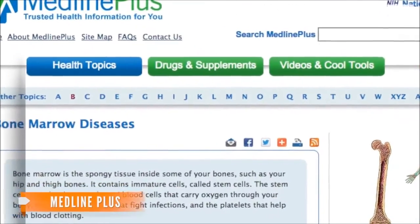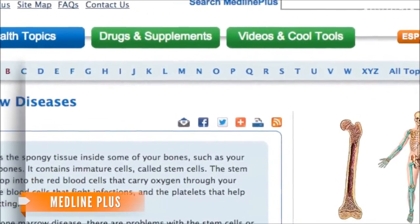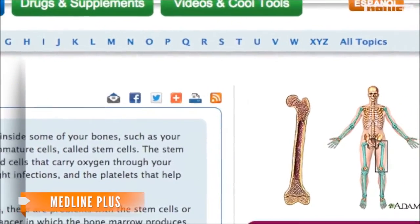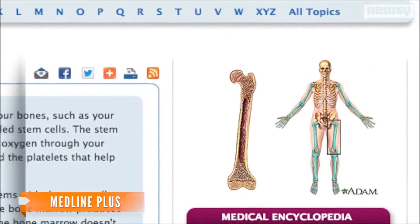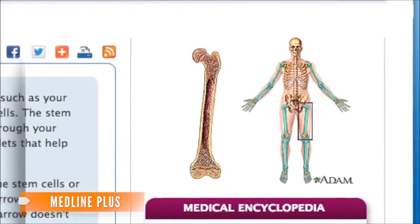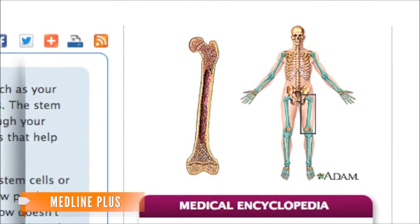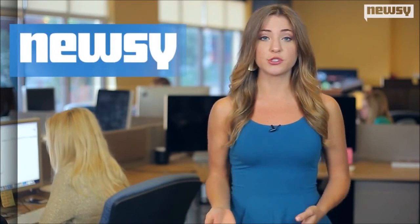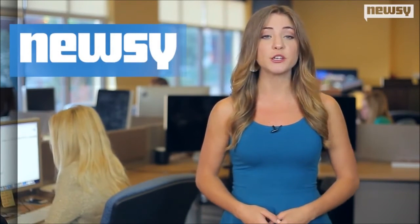Bone marrow is the soft, spongy area in the middle of some of the larger bones of the body. It produces the cells that make up the blood, such as the red cells and the white cells. By replacing bone marrow, one can replace sick blood cells with healthy ones, says Dr. Dennis Gastenow, Director of Medicine.